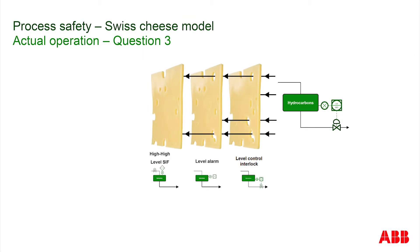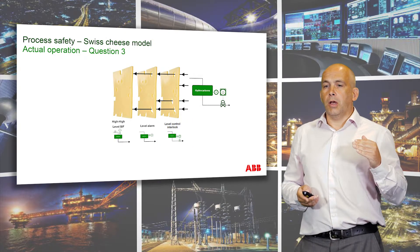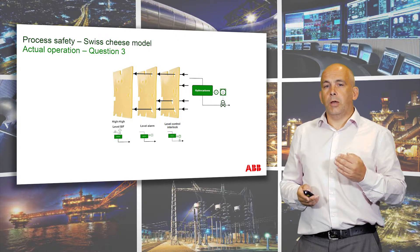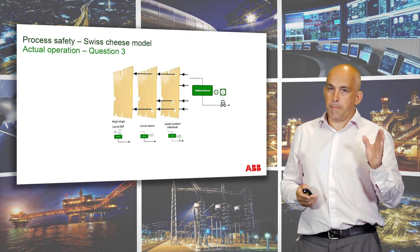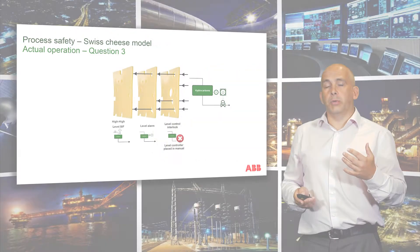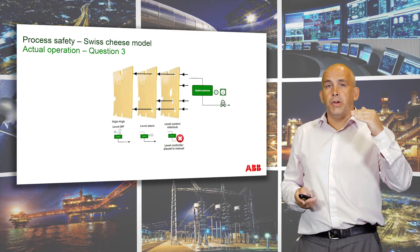So what happens in operations? Consider that vessel — the level isn't controlling very well at the set point, maybe due to a disturbance. The operator thinks he can control it better than the controller and places it into manual. As soon as that occurs, we're actually defeating that particular barrier — in our Swiss cheese analogy, we're introducing a new hole. Because the controller is now in manual, the level isn't controlling well at all, and the level starts rising, hitting the alarm threshold.